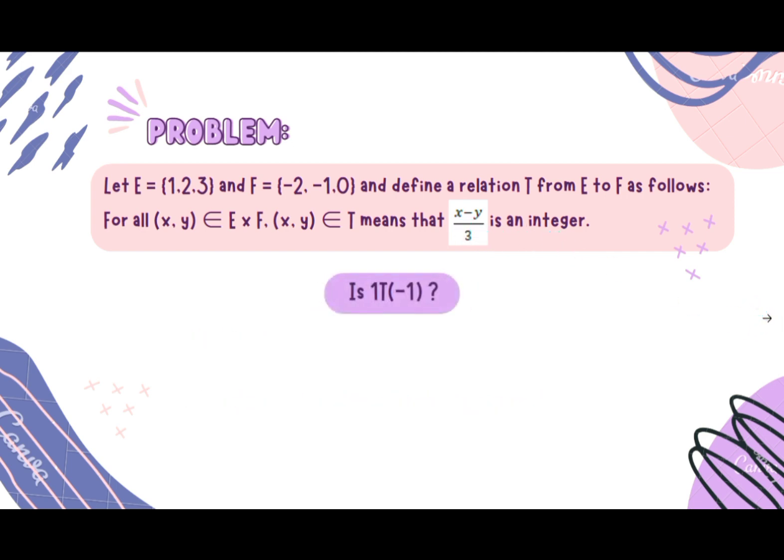Next, we have: is 1 related to -1? Let's find out. Just like what we did previously, we just need to substitute the given. We will have 1 as x and -1 as y, then follow the formula given.